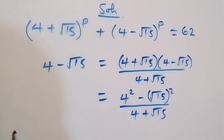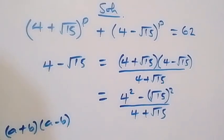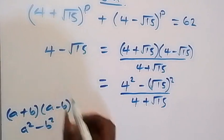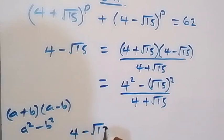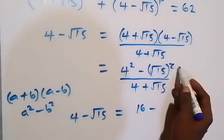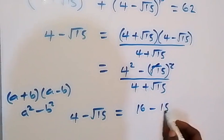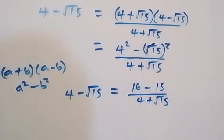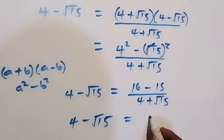So that means (4 minus root 15) can simply be written as: 16 minus 15, over (4 plus root 15). And 16 minus 15 is 1. So (4 minus root 15) is now equal to 1 over (4 plus root 15).